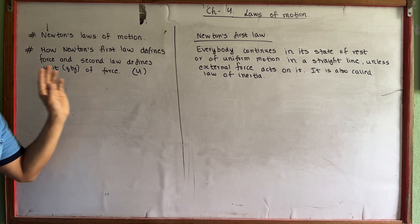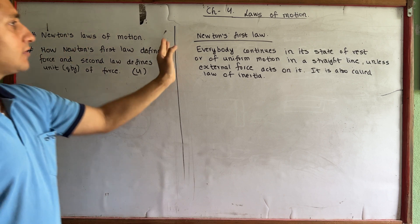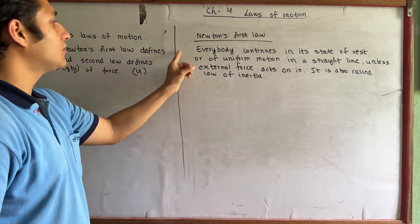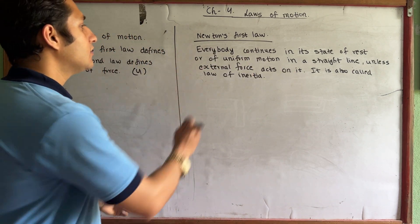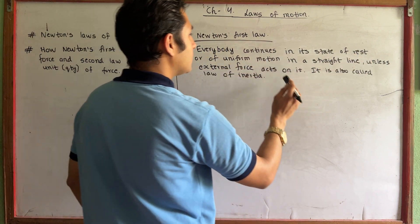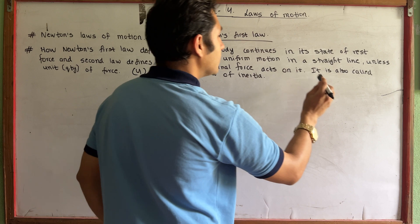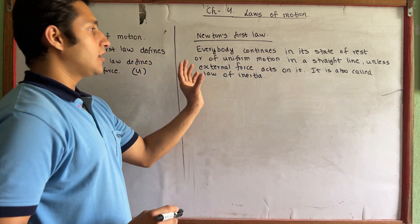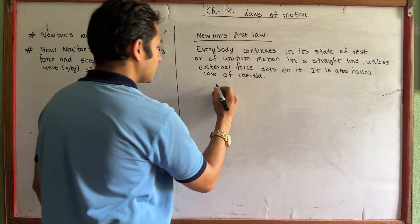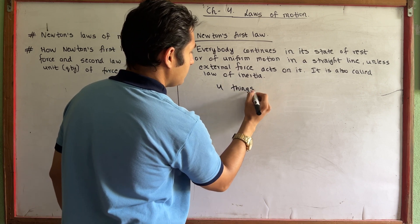This is the first law — it will be proved and explained. Newton's first law states: every body continues in its state of rest and uniform motion in a straight line unless an external force acts on it. It is also called the law of inertia.